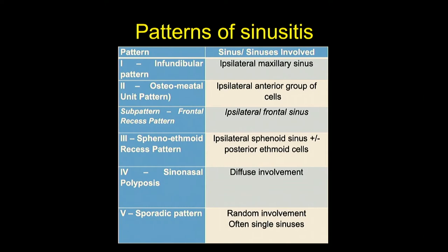A sub-pattern under Pattern 2 is the frontal recess pattern, which obstructs only the frontal sinus drainage pathway, so disease will be localized to the ipsilateral frontal sinus. Pattern 3 is the sphenoethmoidal recess pattern, involving the posterior group of sinuses — disease will be localized to the sphenoid sinus plus or minus the posterior ethmoidal air cells.